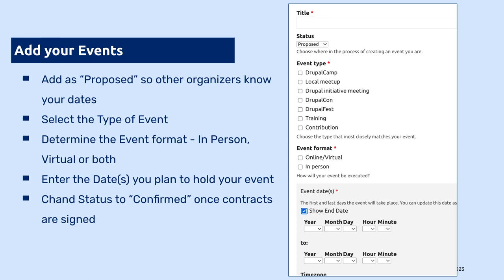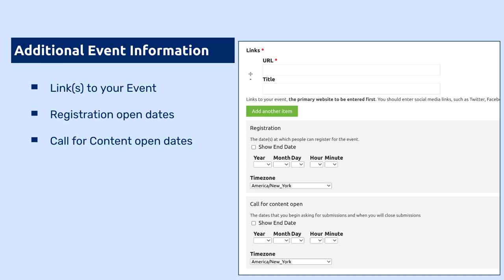Then you put the dates in, whether it's one day or multiple, and your time zone. You want to change it from proposed to confirmed once you have your contract signed with the venue — that often takes a while, so you add as proposed first and then update to confirmed so people understand your event is actually going to happen. You also put additional information like your URLs, when registration opens, and when calls for content are open. People will reach out wanting to know when they can submit a session, so if you put your dates here, everybody knows without having to go to your website.